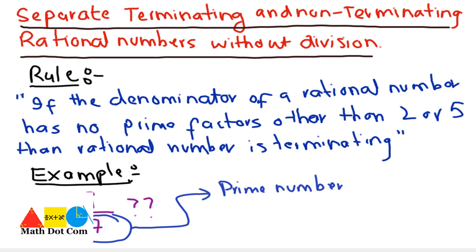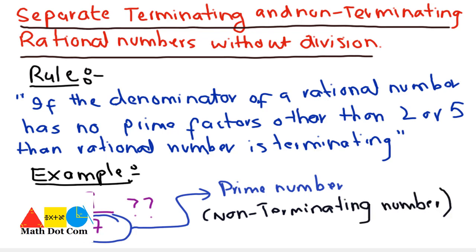Keep in mind that this will not be the case when the denominator is 2 or 5, because 2 and 5 are also prime factors. If we have 9 over 2 or 9 over 5, then in those cases they will be terminating as per the rule.